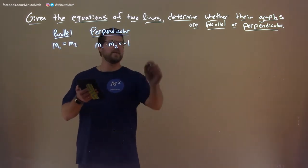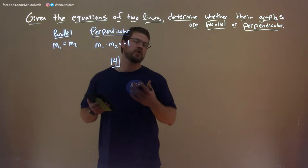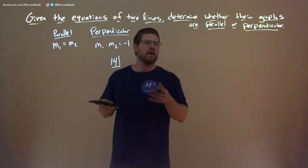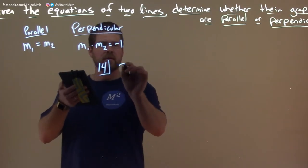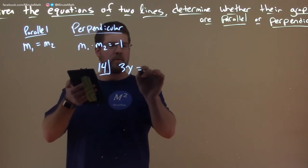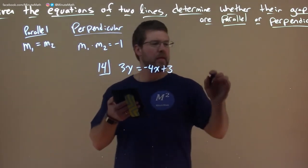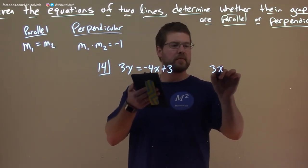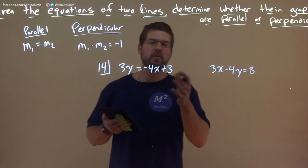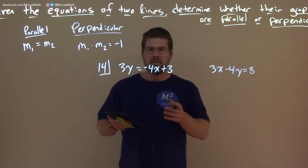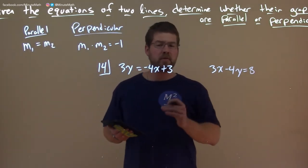All right, so let's try an example here. Let's go to number 14. We're going to be given two lines and we're going to see where they lie. What type of lines are they? So we're given 3y equals negative 4x plus 3, and the other equation, 3x minus 4y equals 8. So we have two lines here and we really want to see what are they, are they parallel or perpendicular, and we don't necessarily need to graph it to do that.